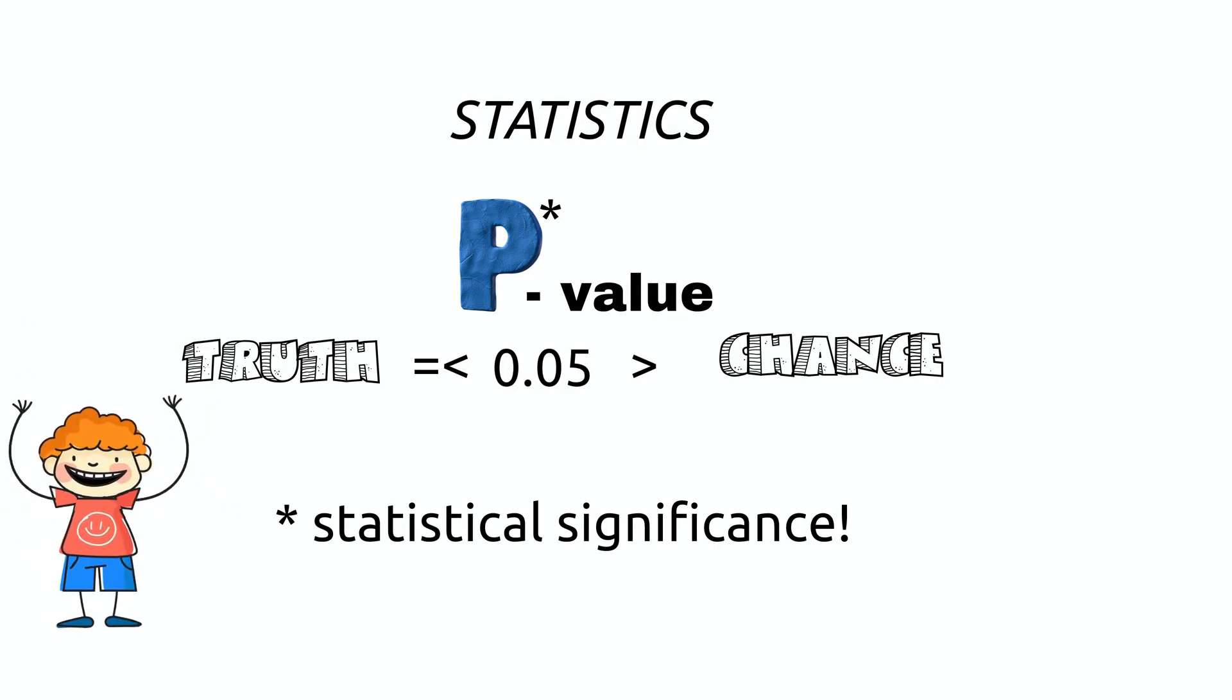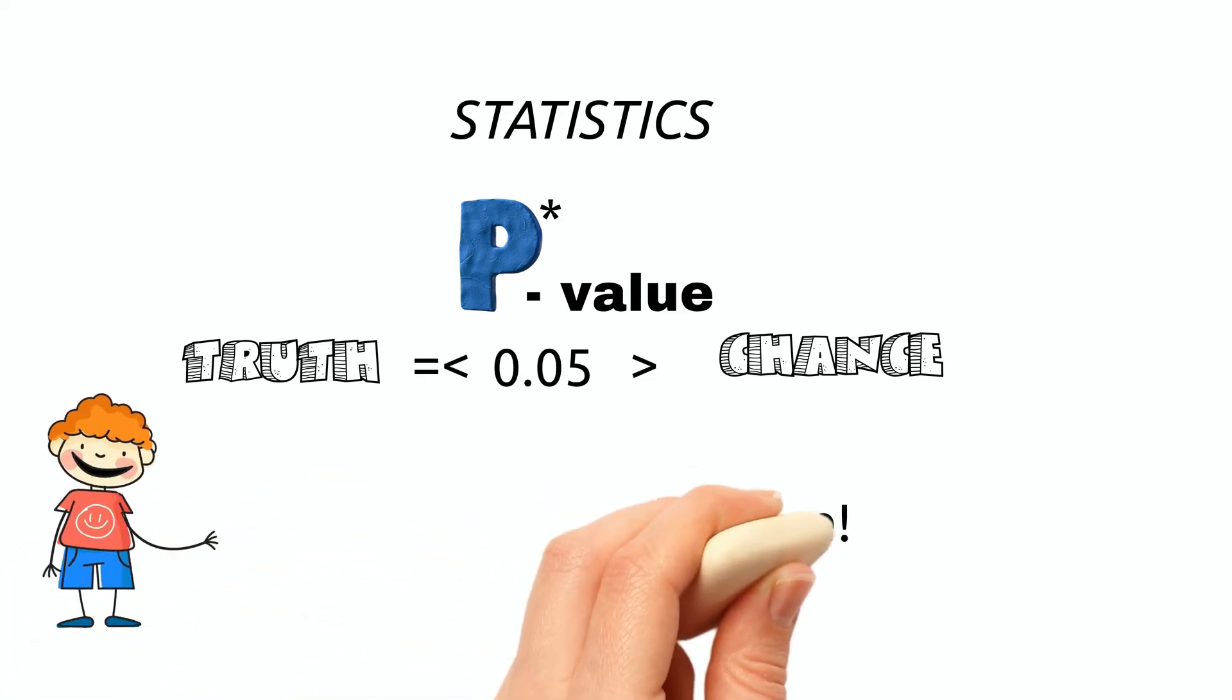However, p-value only helps us to point out whether study outcomes are due to chance or not. But it does not tell us how important or how strong the association is or its health implications.